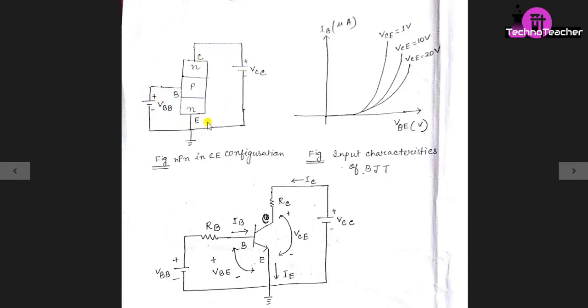Here emitter is common to both input and output side, hence the name common emitter. Input is applied here in the base-emitter terminal and output is collected from the collector-emitter terminal.